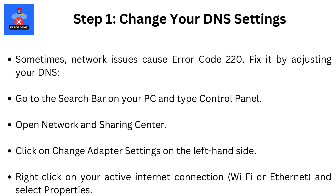Go to the search bar on your PC and type Control Panel. Open Network and Sharing Center. Click on Change Adapter Settings on the left-hand side. Right-click on your active internet connection — Wi-Fi or Ethernet — and select Properties.